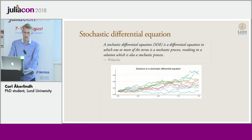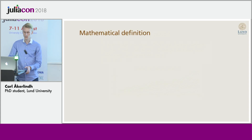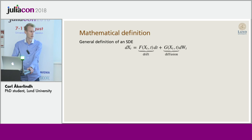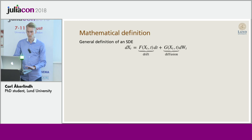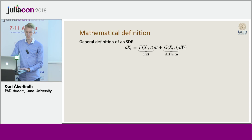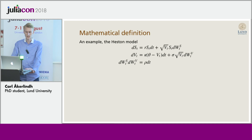So what is a stochastic differential equation? In general, the mathematical definition is something like this, where you have a system which is defined by its drift function and diffusion function, and these can be multivariate. From now on I'm going to use a common example used in finance called the Heston model, which describes an asset price and its stochastic volatility.